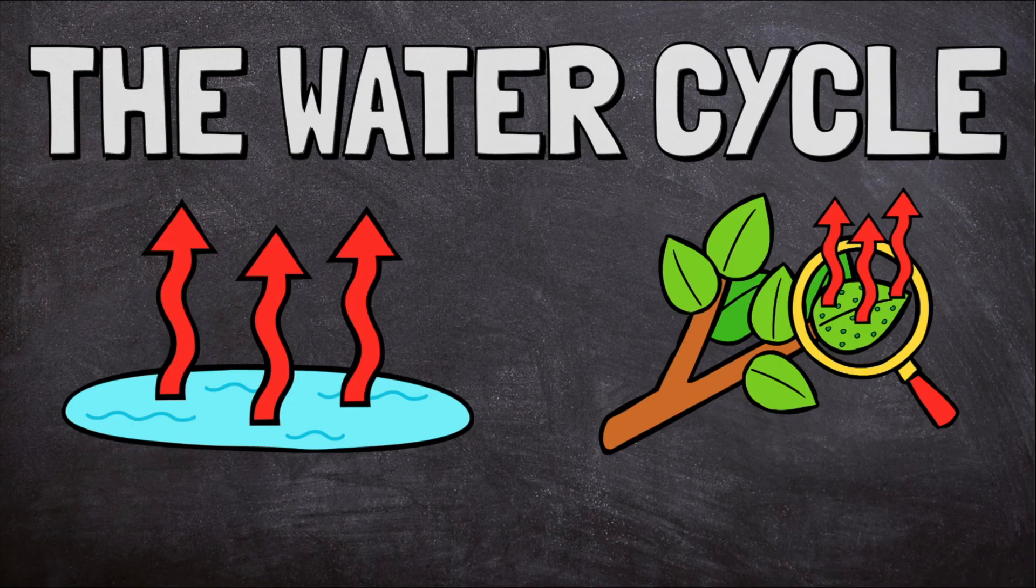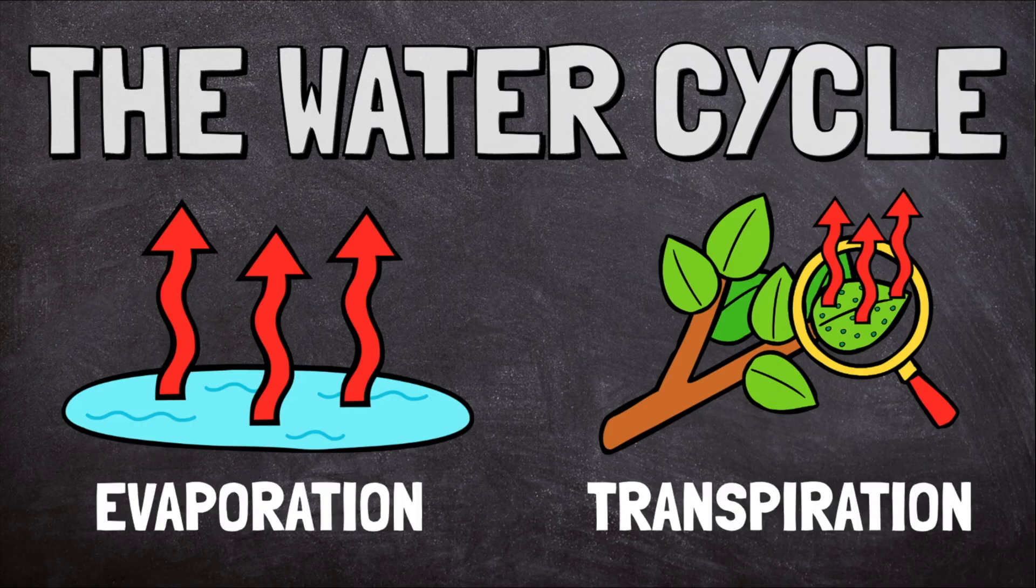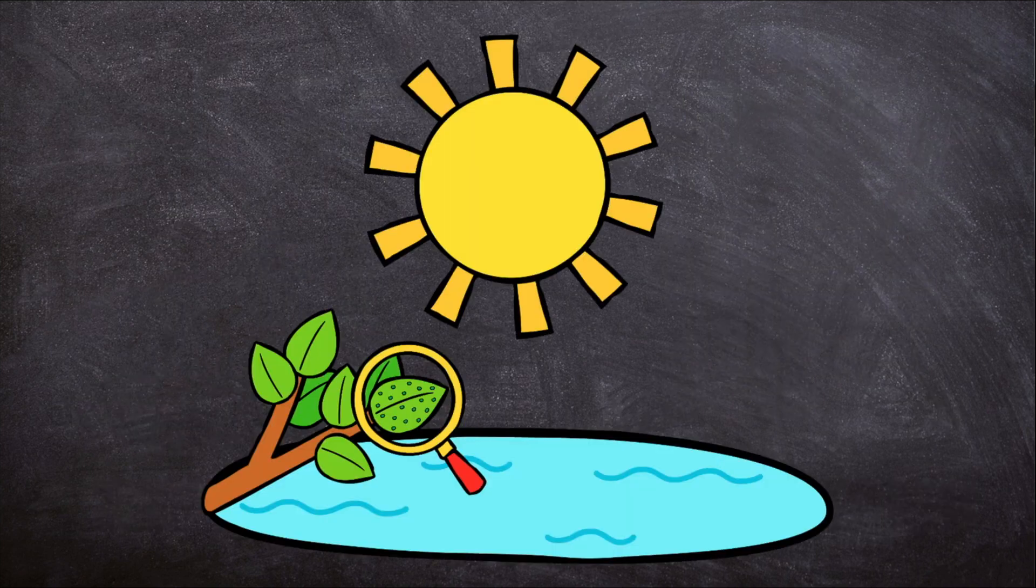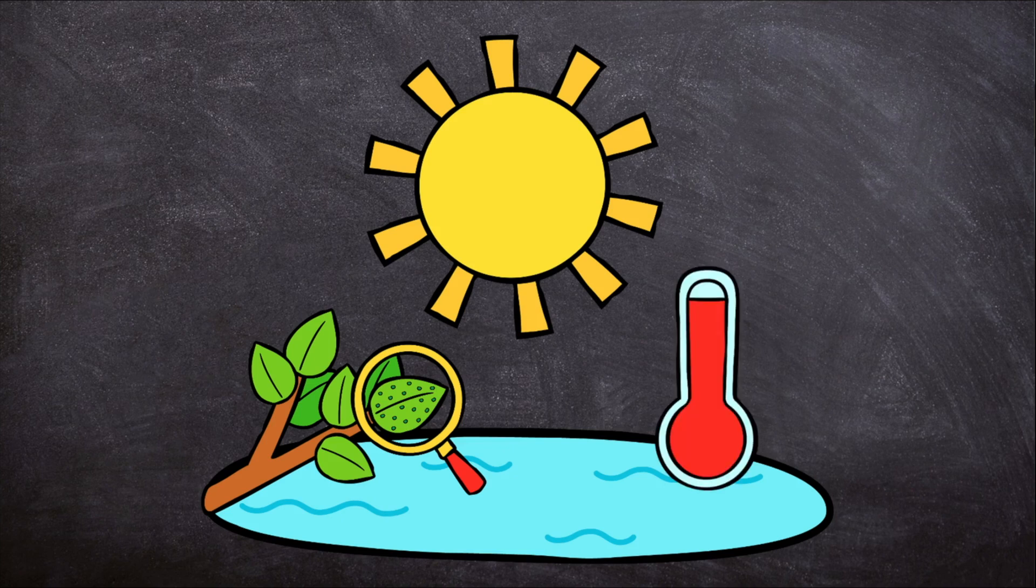This is called evaporation or transpiration. Like most processes on Earth, the water cycle begins with heat from the Sun. The Sun's heat warms up the water on Earth's surface.